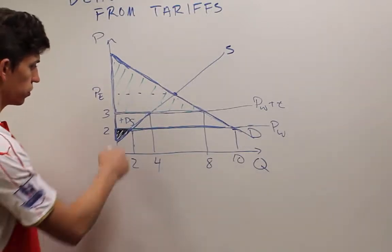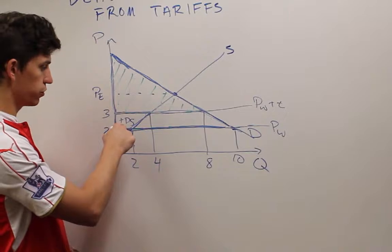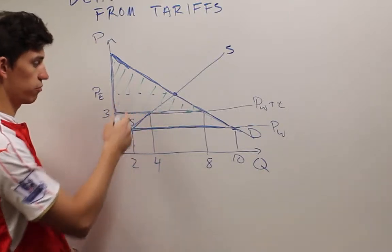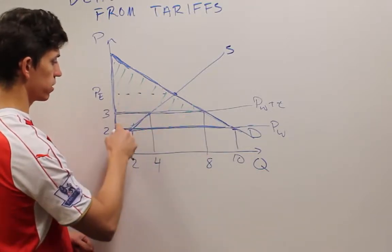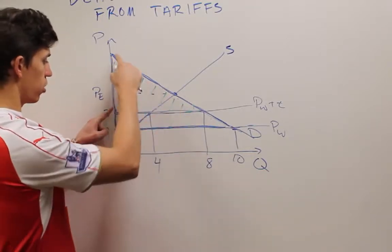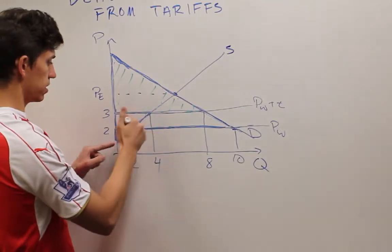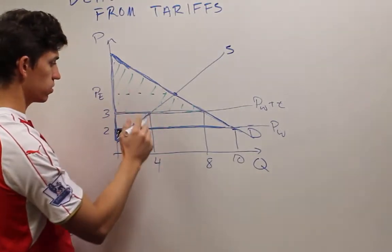This amount that was added to producer surplus was just taken away from consumer surplus. So that's a wash. Consumers used to have this big triangle. Now they're at the smaller one. Producers took up this extra chunk here. So this is a wash.